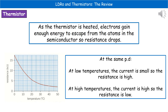When we heat up our thermistor, the electrons within those atoms of the semiconductor gain enough energy to escape from them. So we've got more electrons that are delocalized and therefore the resistance is going to drop, which leads to an increase in current. The graph in the bottom left shows temperature along the x-axis and resistance on the y-axis — as temperature increases, resistance decreases. Be careful not to draw it as a straight line; it is a curved line.